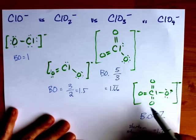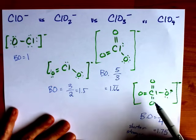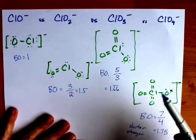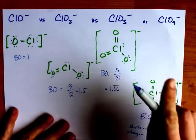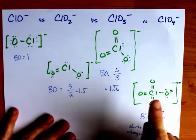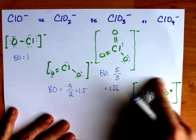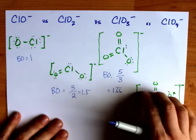And again, I want to emphasize that because there are equally contributing resonance structures, all four of these bonds are the same length and the same strength as each other. Even though the Lewis structure shows a single and three doubles, they are all the same length and strength because of resonance.